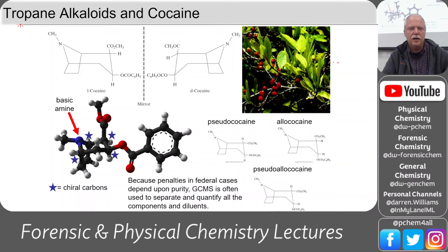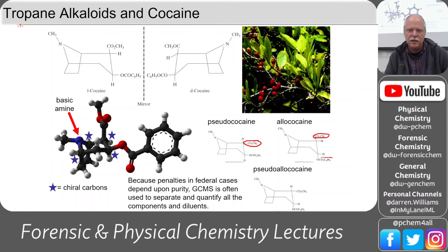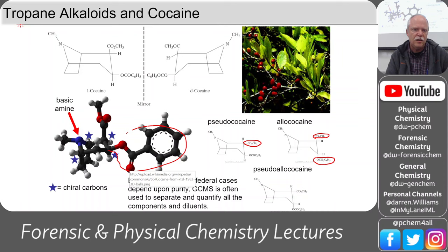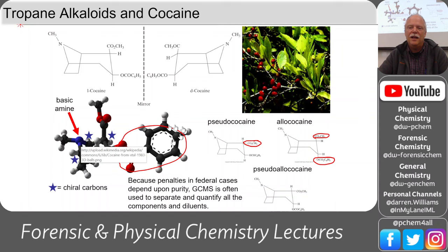Here are the tropane alkaloids and cocaine from the coca plant. The molecule has different isomers — an equatorial or axial position for the acetyl group. The benzoic acid piece can similarly be in an axial or equatorial position. There are four chiral centers on these cocaine derivatives, giving a lot of variety that may provide information about sourcing.